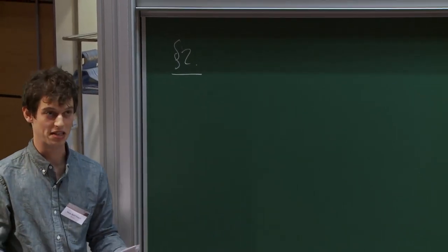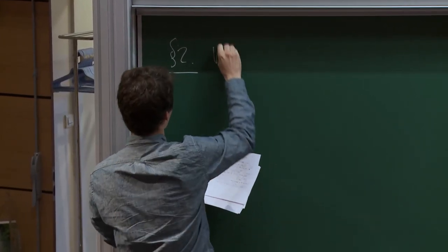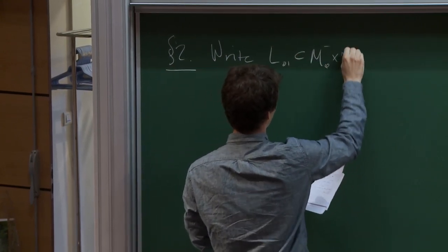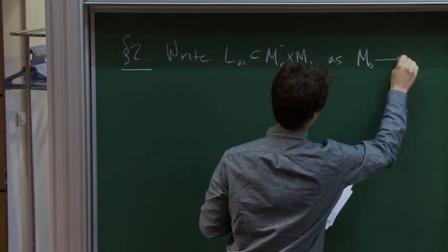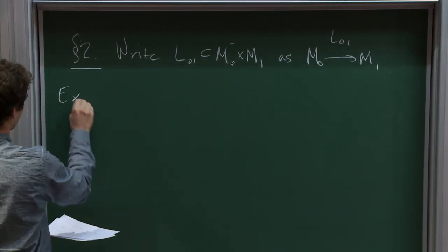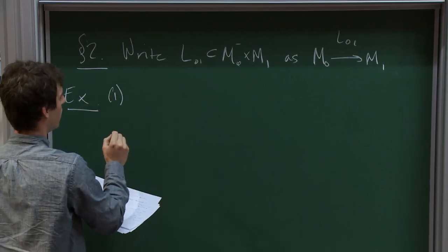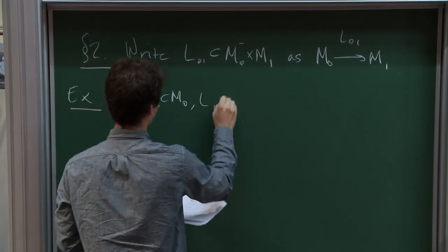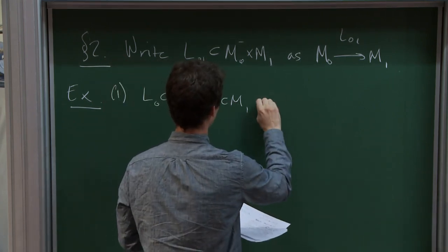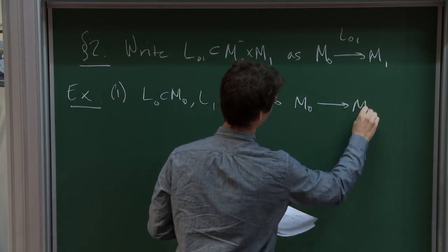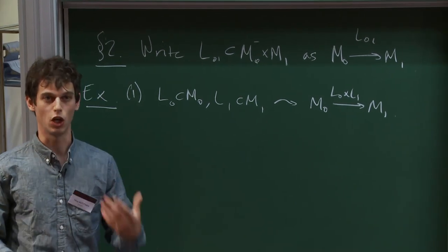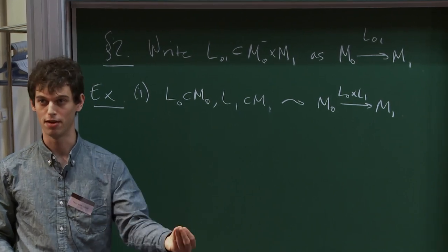Let me tell you more about Lagrangian correspondences and give some examples. From now on I'll write a Lagrangian correspondence as an arrow rather than as a subset. As a first example, if I take a Lagrangian in M0 and a Lagrangian in M1, I can form their product, which will be a Lagrangian correspondence. In particular, if M0 is a point, this tells you that Lagrangians induce Lagrangian correspondences from the point to whatever manifold they live inside.